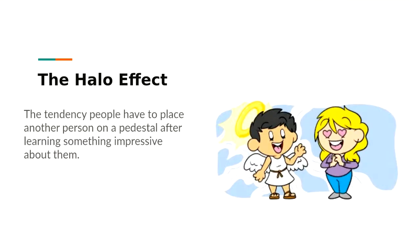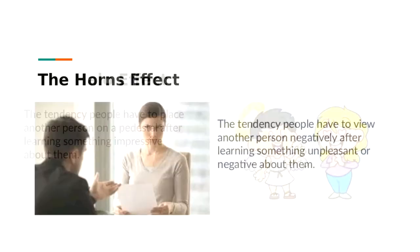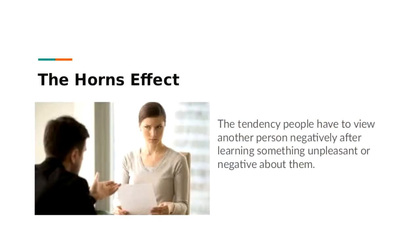The halo effect is the tendency people have to place another person on a pedestal after learning something impressive about them. This happens when you see something very impressive in a candidate, such as attending an Ivy League school or having a prestigious job title. A way to avoid this is to look at the rest of the candidate's profile beyond that one standout attribute and compare them to other candidates without focusing on that one impressive detail.